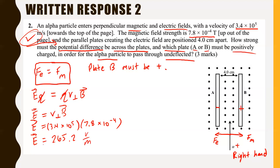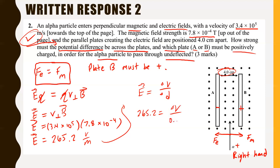Now we use E-arrow equals delta V over delta d to find the voltage. We know the electric field strength is 265.2 volts per meter, and the distance between the plates is 4 centimeters, or 0.04 meters. So 265.2 equals delta V over 0.04. Multiplying through: delta V equals 11 volts, rounded to two significant digits.